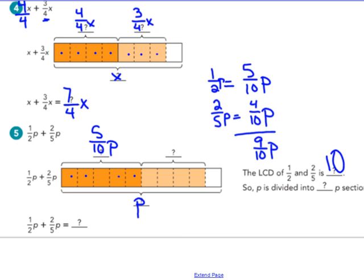And my two-fifths p equals four-tenths p, which gives me nine-tenths p total. So my light orange 1, 2, 3, 4—four out of 10 of them are light orange. That represents my two-fifths, four-tenths p. And five-tenths p plus four-tenths p does equal nine-tenths p.